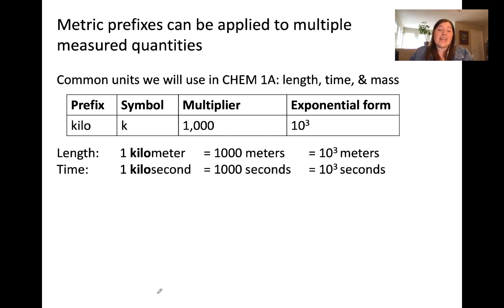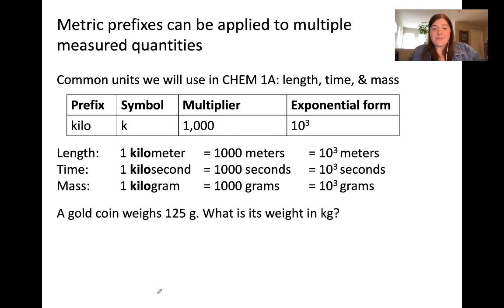For time, a kilosecond is equal to a thousand seconds or 10 to the 3 seconds. For mass, a kilogram is equal to a thousand grams or 10 to the 3 grams. Let's put this to the test.